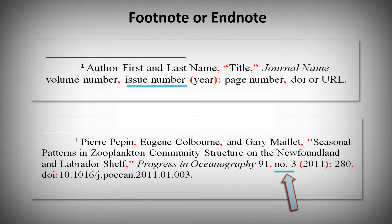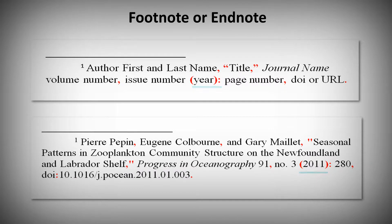Here you do use the abbreviation 'NO' to indicate the issue number. Next, in brackets, enter the year of publication, followed by a colon. Then enter the page number where you've found the quotation, followed by a comma. Finally, enter the DOI or URL for the article.